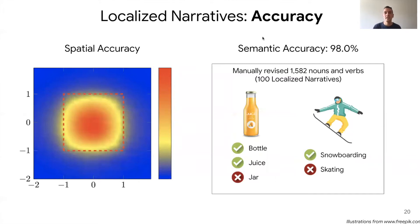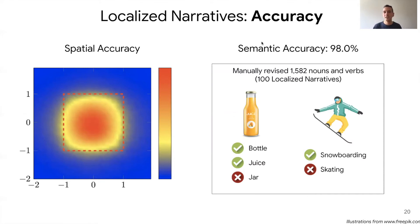Localized narratives are rather accurate. We took annotations for the COCO dataset, took the mouse trace segment corresponding to a word, and associated it to the nearest bounding box of the right category. We show where the trace points land in a normalized coordinate frame of that box, giving the impression that on average most points are inside the box. We also evaluated semantic accuracy: we took about 1600 nouns and verbs and manually inspected them over 100 images, checking whether the noun and verb correspond to the content — and it is the case 98% of the time.